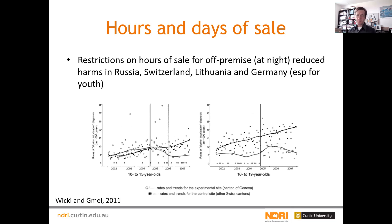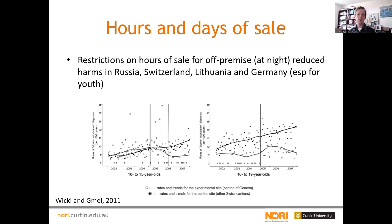The clearer evidence is around nighttime trading. There's a small number of studies looking at retail or off-premise outlets and what happens when you restrict their trading at nighttime — studies from Switzerland especially, but also from Russia, Lithuania, and Germany. An example from Geneva shows that when the hours off-premise outlets were allowed to trade were reduced, there were pretty significant reductions in harms for young people, while a control site continued unchanged. So making bottle shops close earlier in the evening pushed harms down among young people, consistent across a few other studies.